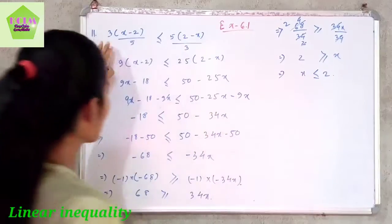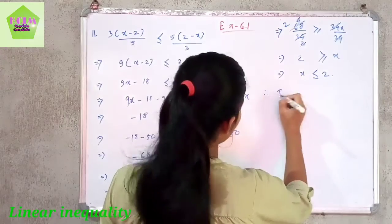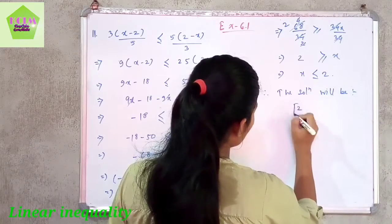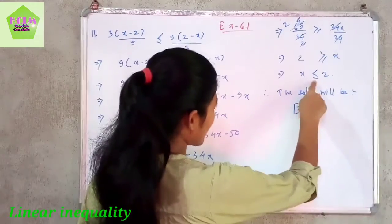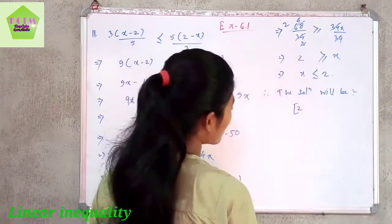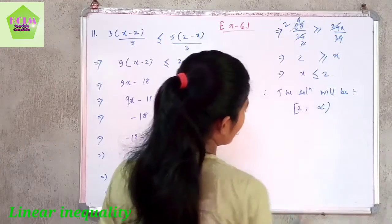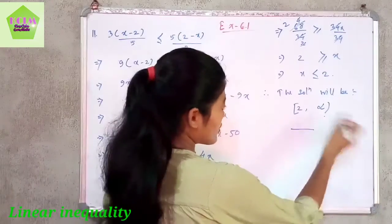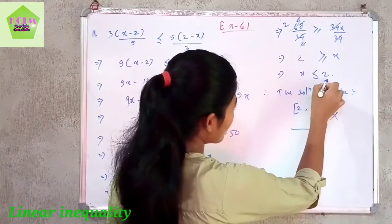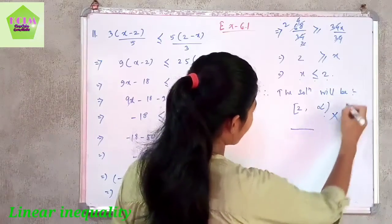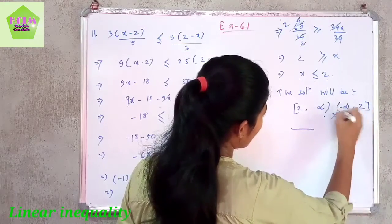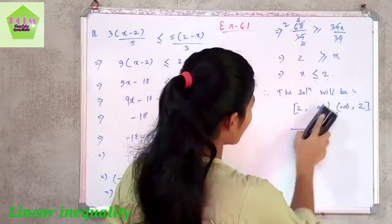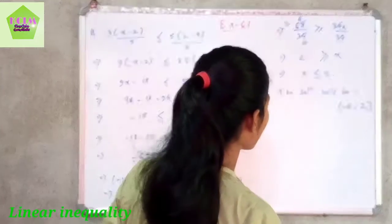We have to find the value of x for real values. Since this is not strictly less than but less than or equal to, the value 2 is included. Therefore the solution is the closed-open interval minus infinity to 2, written as minus infinity comma 2 with a closed bracket at 2. The solution is minus infinity to 2.